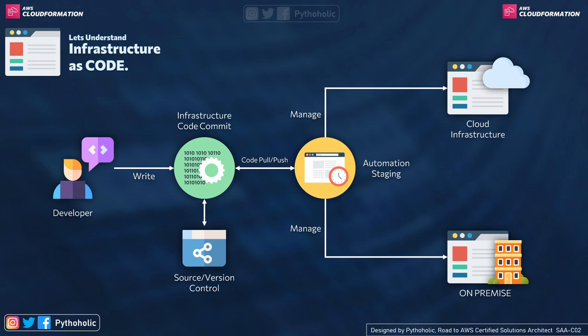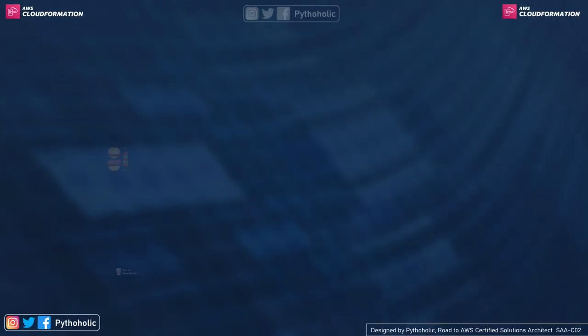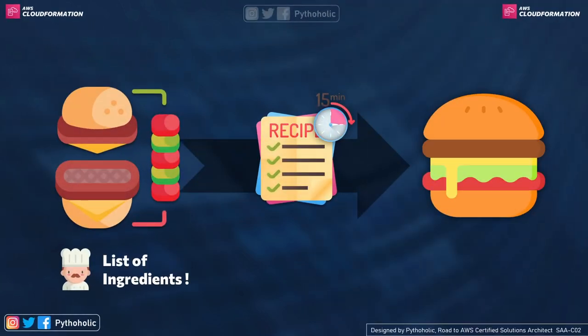The code is source-controlled by a version control application like Bitbucket, SVN, or GitHub. That code is consumed by the automation stage to automate cloud provisioning, which is taken up by the cloud service provider like AWS to deploy the application on-cloud or on-premise. Now you understand the importance of the recipe — let's see the same concept applied to cloud.